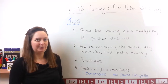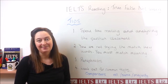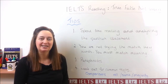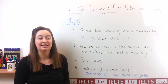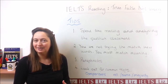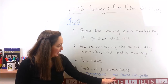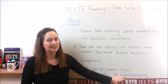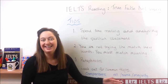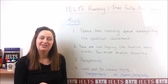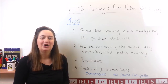Tip number four: look out for common traps. One common trap you already know is comparisons. If you see a comparative sentence in your question — more or less than — make sure you also find a comparison in the passage, because if it's not there, it will probably be not given. Also look for quantifier words: if the passage says 'all' and the question says 'some,' that's not a match. If the passage says 'the majority' and the question says 'some,' that's also not a match. This is really testing your ability to understand the exact meaning of words.